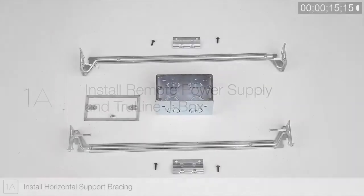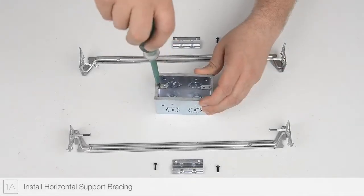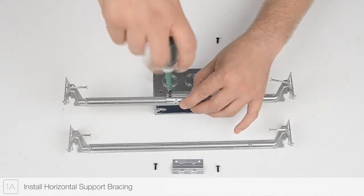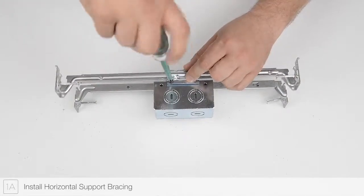Step 1A. Separate the L-shaped power channel connector from the junction box. Attach the supplied mounting bars to the sides of the junction box as shown.